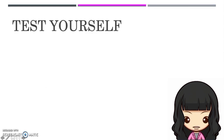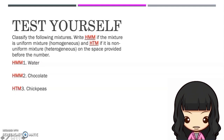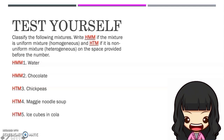Have you written all your answers? Then let's check if your answers are correct. You need to write HMM if the mixture is uniform and HTM if the mixture is non-uniform. Number one — Water: the answer is HMM. Number two — Chocolate: the answer is HMM. Number three — Chickpeas: the answer is HMM. And for number five — Ice cubes in cola: the answer is HTM.